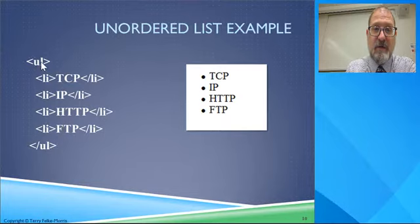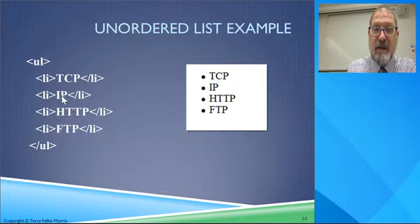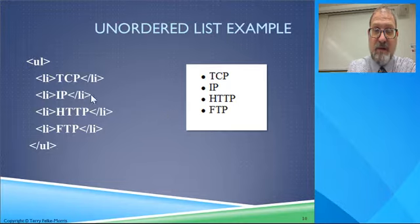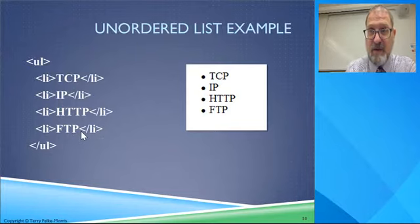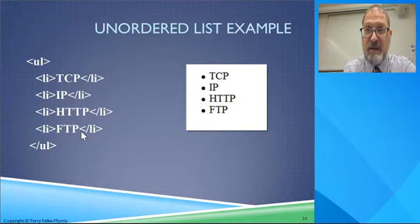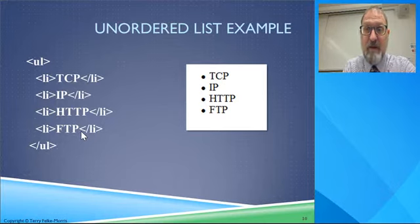So: UL for unordered list, we close out the UL, and then we have each of the different list elements. LI for TCP/IP, then we close it off. LI for IP. LI for HTTP — each one of these corresponds to one of the list elements. Each list element is a block-level element so it puts a return at the end, and same with the UL. You can really customize the bullet format and do some great stuff with lists. We will be using lists a lot — ordered and unordered, especially unordered.